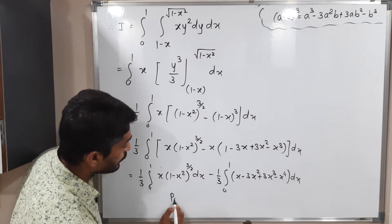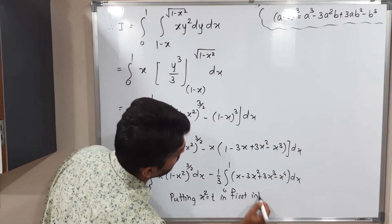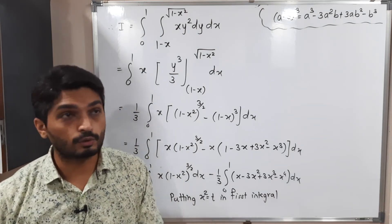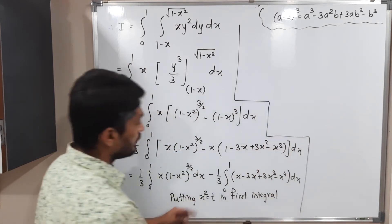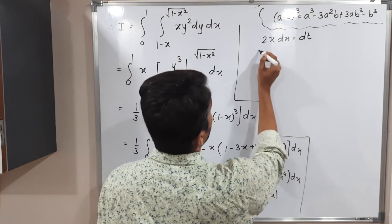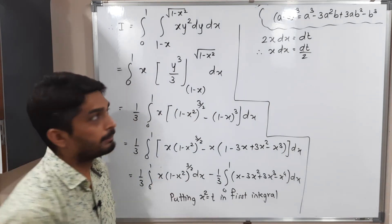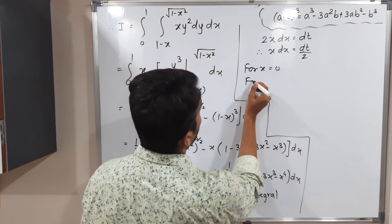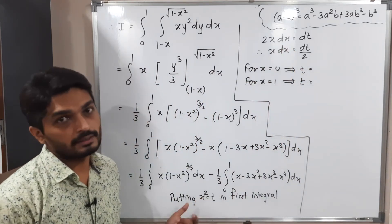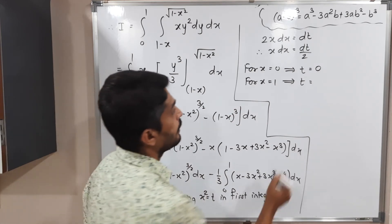Putting x² = t in the first integral only. The derivative gives 2x dx = dt, so x dx = dt/2. For new limits: when x = 0, t = 0; when x = 1, t = 1. So the limits remain 0 to 1 in terms of t.